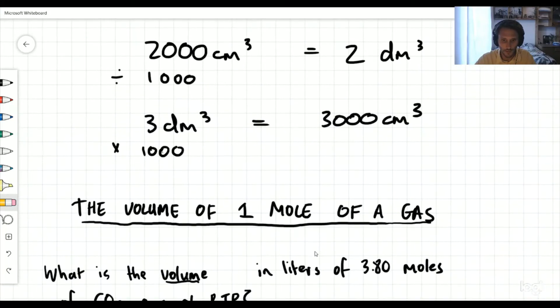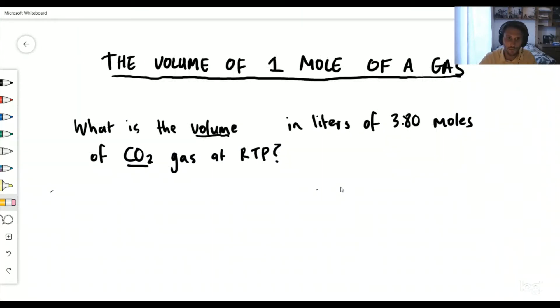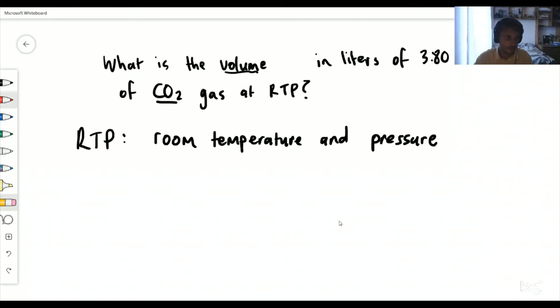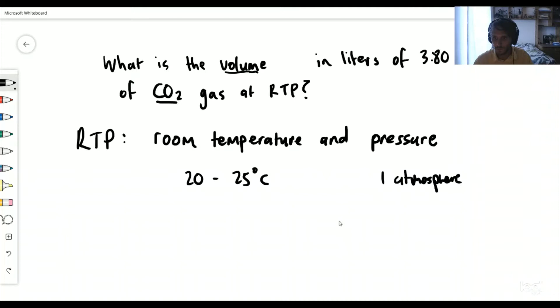Let's go on to a problem involving these liters and especially involving the idea of one mole. So this new heading: what is the volume of one mole of a gas? A typical question might be, what is the volume in liters—another word for liters would be decimeters cubed—of 3.8 moles of CO2 gas at RTP. Room temperature is generally taken between 20 and 25 degrees Celsius, and pressure is normally taken at 1 atmosphere.